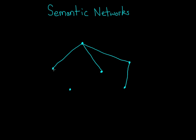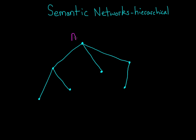Let me show you an example to make this a little more concrete. The first semantic network model was hierarchical, meaning that concepts were organized from higher order categories down to lower order categories and their exemplars. So let's start with a general category: animal. That's this node here. Animal might be linked to other nodes, such as bird or fish.